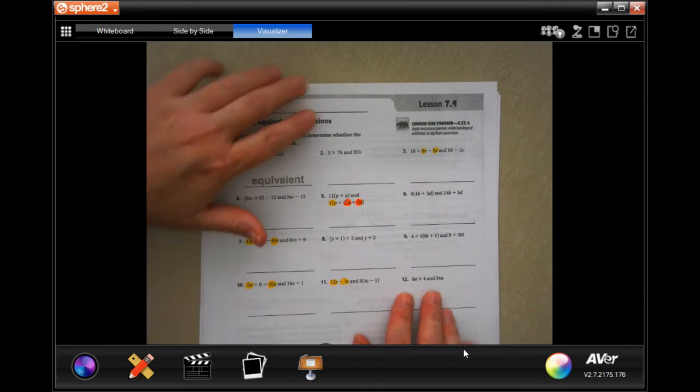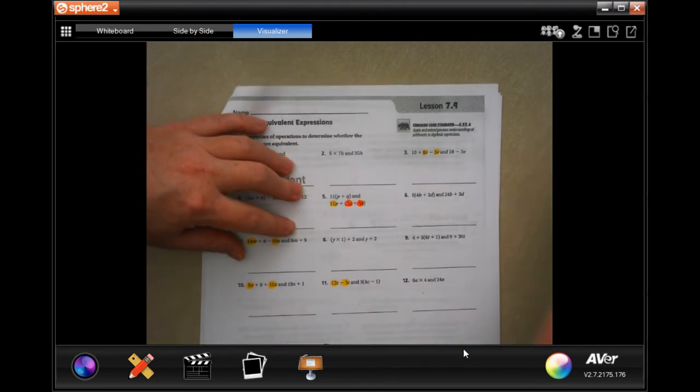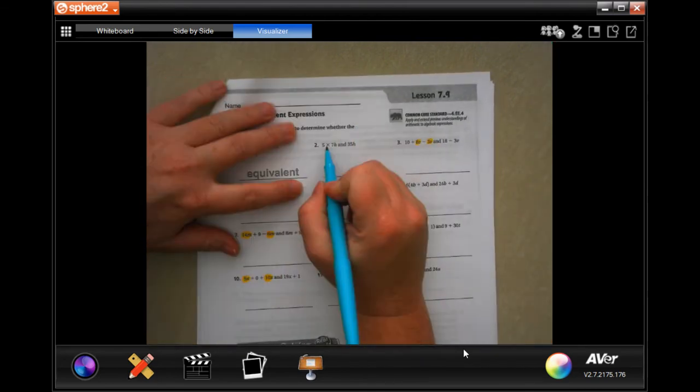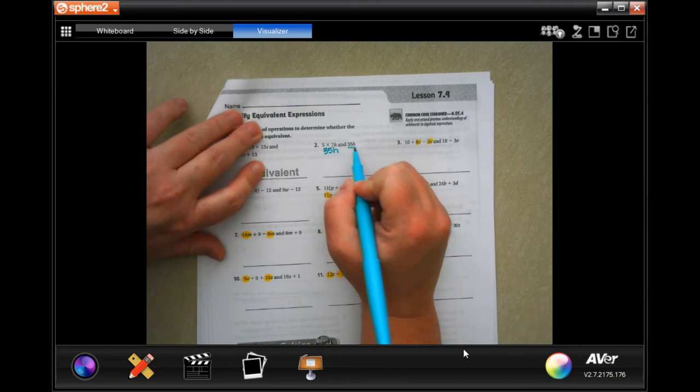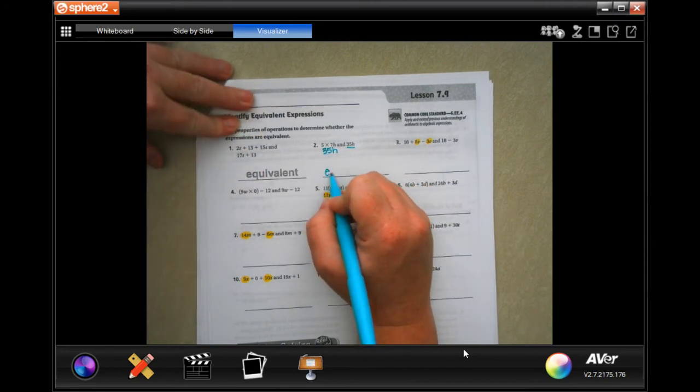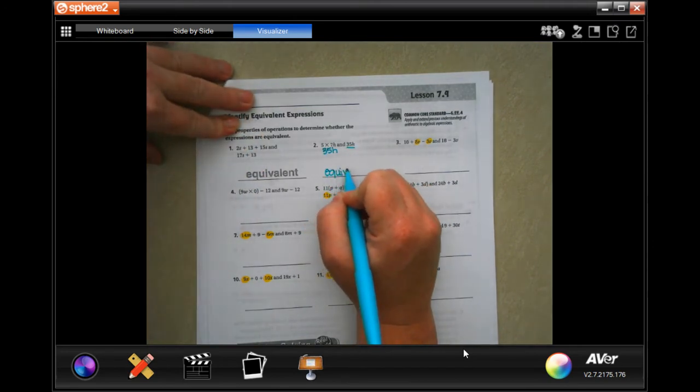We're going to go ahead and get started. So, 5 times 7h, 5 times 7 is 35, and it takes on that h, so 35h. So we're good.